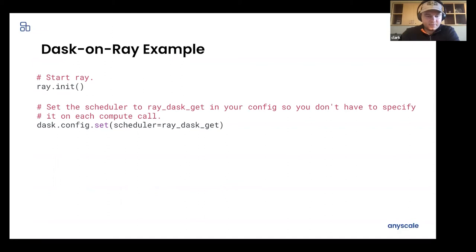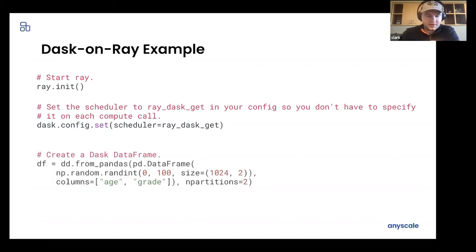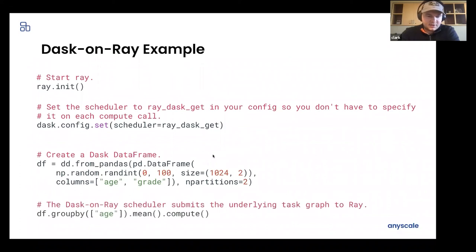So a quick, more involved example. First you start Ray. Next you set the scheduler globally. And then let's say you're just creating a random Dask data frame. So this is creating, using NumPy to create random integers. It's going to have two columns, age and grade, two partitions. And then typical, just your normal Dask workload. It's completely Ray agnostic after you set the scheduler. Do a group by, do mean, do some aggregation, then compute. And all of this will transparently submit the underlying Dask tasks to the Ray cluster and then bring that result back to your client code here, bring that result back from the cluster.